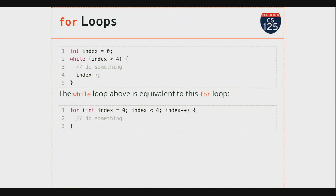For loops have three parts. Going from left to right: the first part is an initialization step — this happens once, the first time the for loop is entered. The second is a condition — this is checked every time I enter the for loop, including the first time. The final part is an update, sometimes called an update statement — that runs every time the loop repeats but not the first time. So Java executes this by declaring a variable called 'index' of type int, initializing it to zero, checking whether it's less than four, executing the body, and then running the update so index becomes one, then checking the condition again.